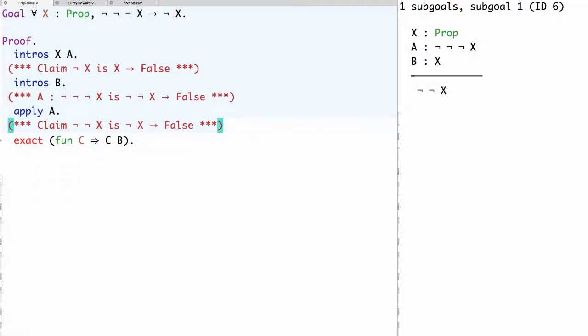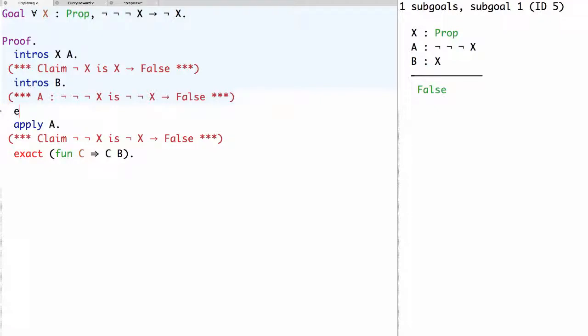Now let's keep working backwards. And recall at this point, we no longer have the assumption c to work with. That's underneath this lambda abstraction. So before we did this apply a, we knew we wanted to have a proof term that started with the function a applied to some proof term, in particular, a proof of the double negation of x.